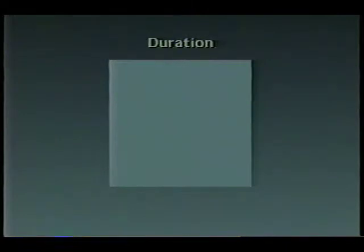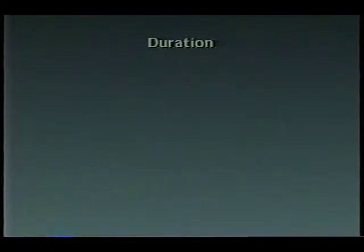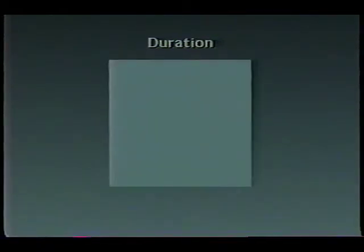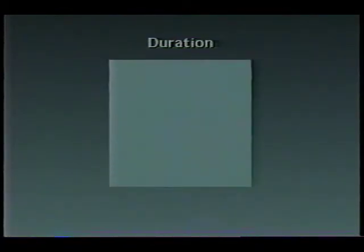There is a difference between displaying a scene as a static map and as part of an animation. The animator controls the duration of a scene, while all other features of a scene are accounted for by variations in the visual variables. In this simple example, we compare relatively long and short durations of a single scene.